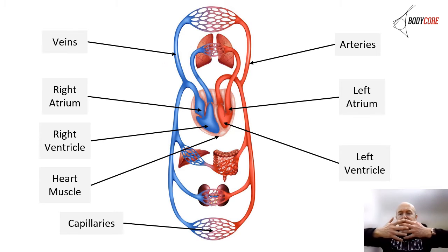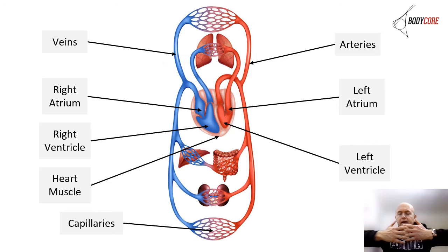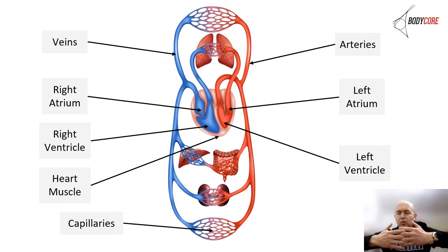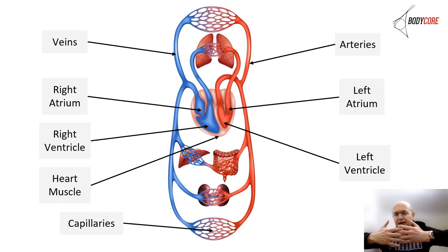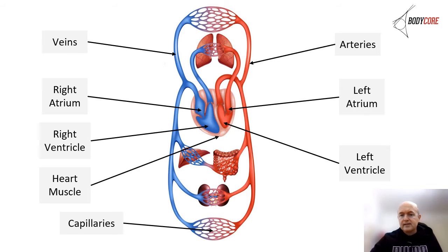Think of capillaries as fine, single cells. Oxygenated blood travels through the artery down into these single cells. The oxygen, nutrients, and hormones all get to the target tissue, then they enter the capillaries and go into veins. The deoxygenated blood, along with waste products like CO2, goes into capillaries and then into veins that take blood back to the heart. That's the circulation system.